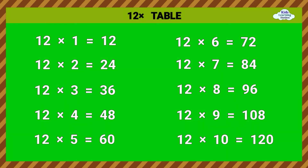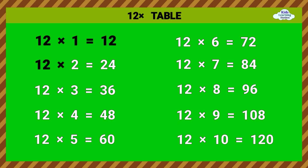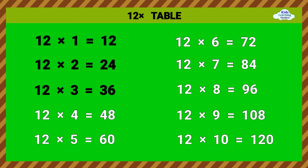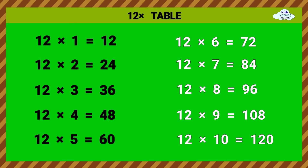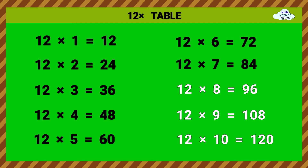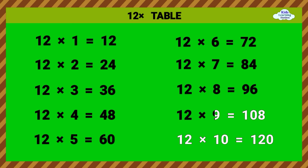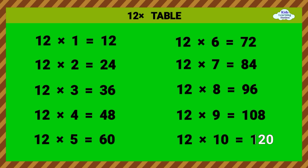Twelve times table. 12 times 1 equals 12. 12 times 2 equals 24. 12 times 3 equals 36. 12 times 4 equals 48. 12 times 5 equals 60. 12 times 6 equals 72. 12 times 7 equals 84. 12 times 8 equals 96. 12 times 9 equals 108. 12 times 10 equals 120.